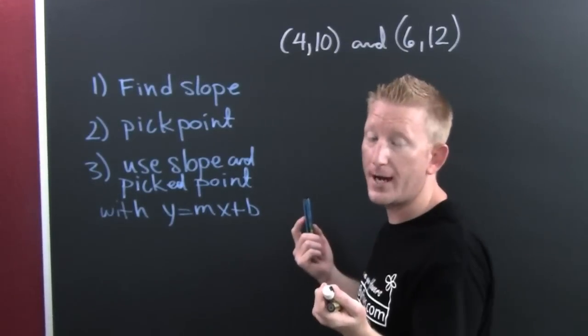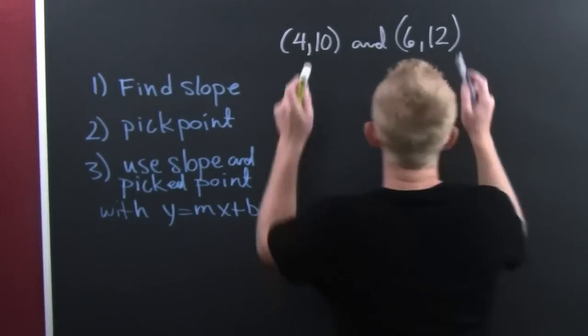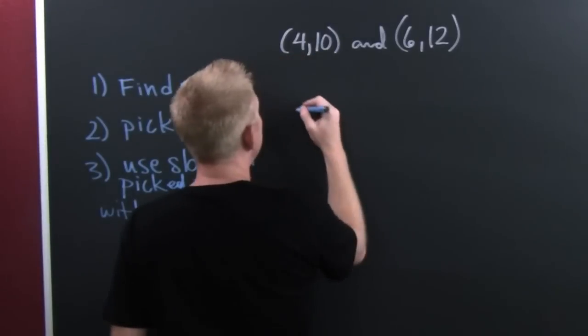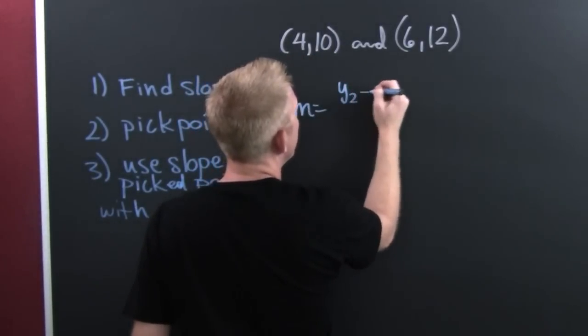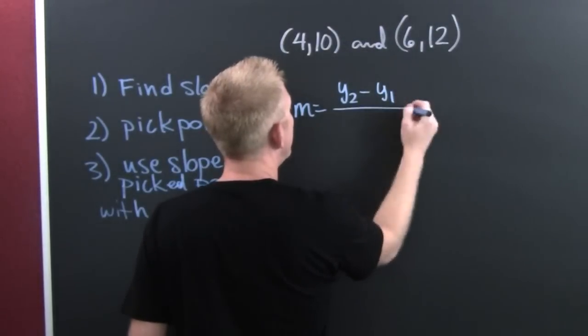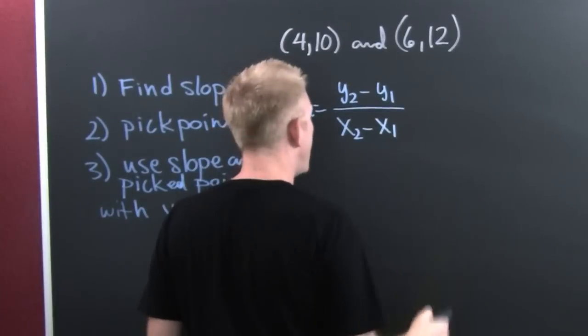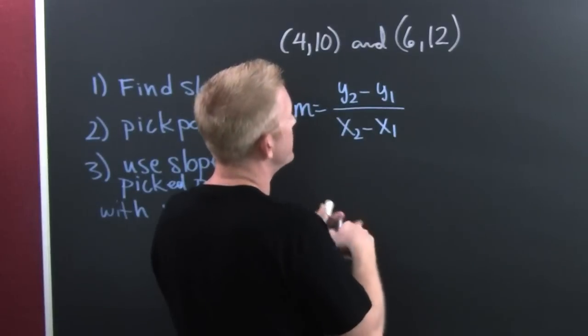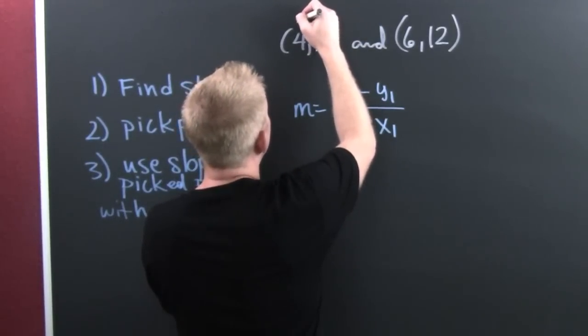Or perhaps point-slope if that's your preferred method. So here, we need to first find our slope. Slope, that's y2 minus y1 over x2 minus x1. Yes, we are familiar with this. So then, until you're a professional, I strongly encourage that you label.